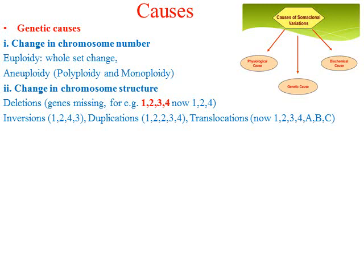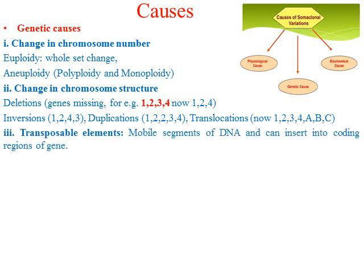Translocation means the whole gene moves from one chromosome segment to another. The chromosome number does not change, but structurally the chromosome is different. This also leads to somaclonal variation. Next is transposons, also known as jumping genes. These are mobile segments of DNA that can move within the genome and also lead to somaclonal variation.